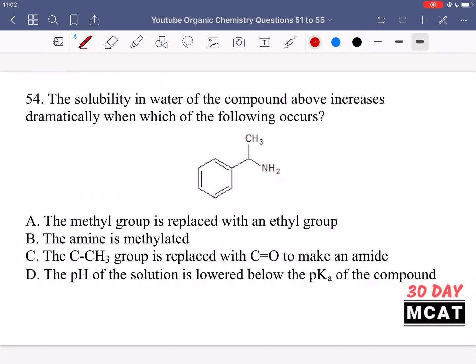In question 54, it says the solubility in water of the compound above increases dramatically when which of the following occurs? We're talking about the solubility of this compound specifically in water and it should increase when a certain modification occurs. Option A is saying if the methyl group is replaced with an ethyl group, so we'd have two carbons coming off here. That's incorrect. What that would accomplish is to make the compound more hydrophobic and that would decrease its solubility in water.